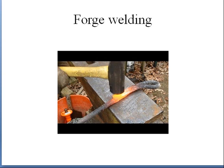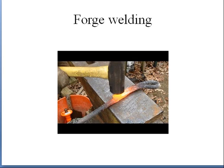Next one is forge welding. In forge welding we heat the material to 90 percent of its melting temperature — we don't allow it to reach its liquid state. We just heat it red hot and we hammer it. So it can be a rod, it can be a plate, it can be anything. We just heat it and hammer it in order to get the weld.